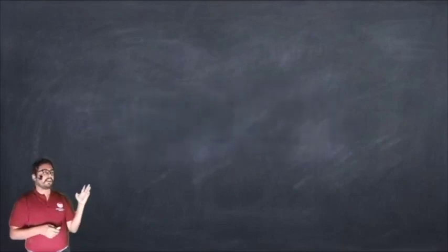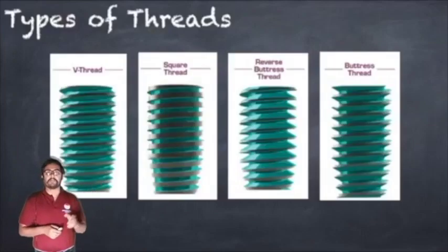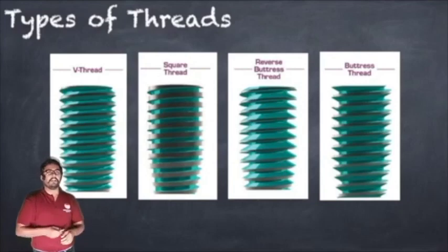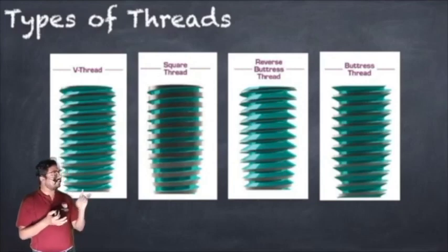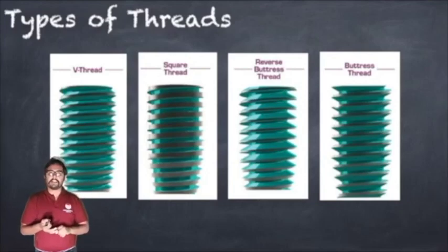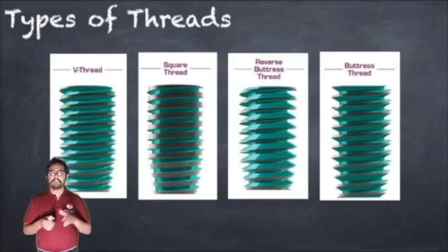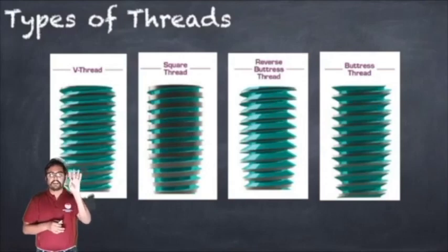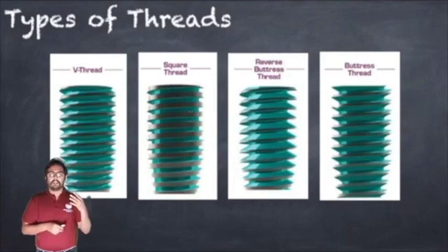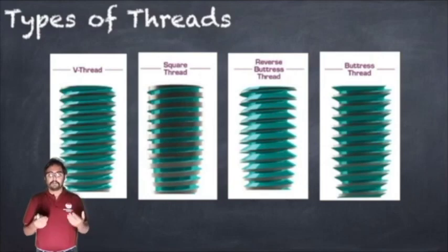What are all types of thread designs? Basically we have V-threads, Square Threads, Reverse Buttress Threads, and Buttress Threads. So four types of implant threads: first V-thread, second Square Thread, third Reverse Buttress Thread, and fourth Buttress Thread.